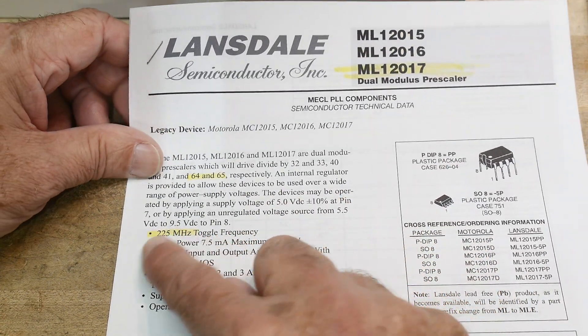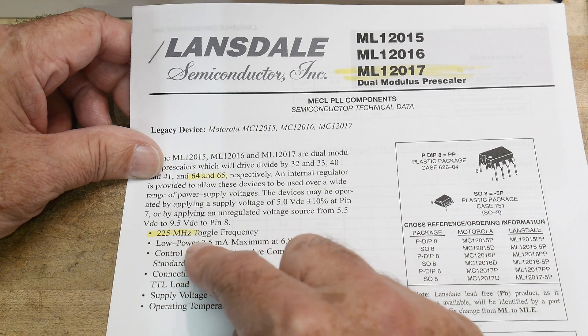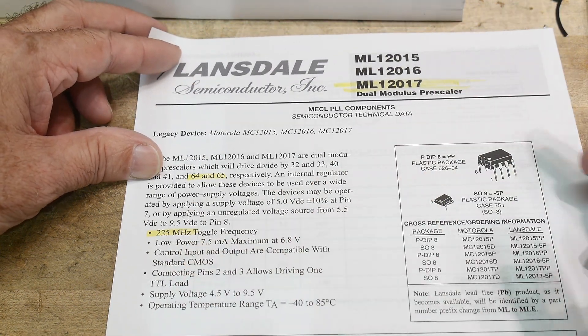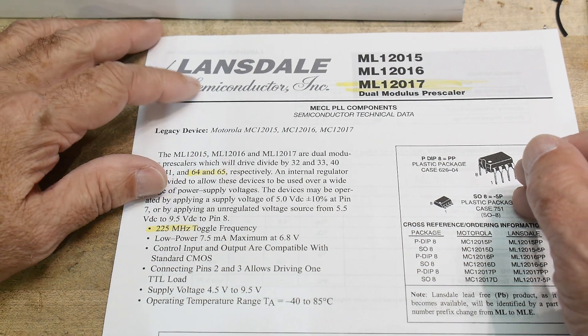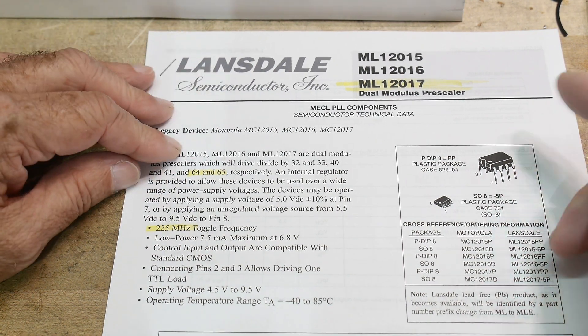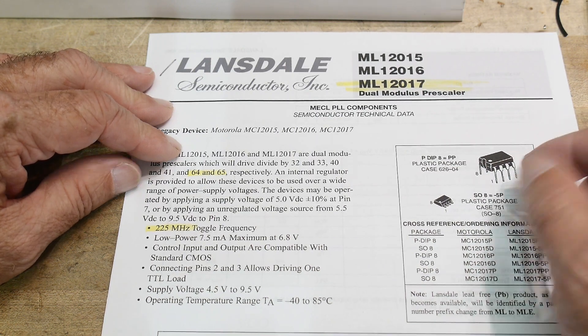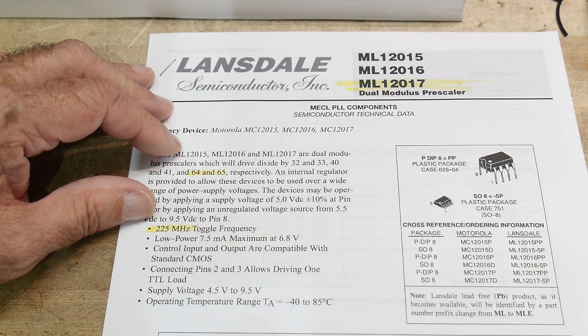All right, these parts will operate up to 225 megahertz. I did a little bit of a pre-scaler introduction when I did an Arduino frequency counter that I built. It would go up to one gigahertz, so this is a slower part, 225 megahertz.